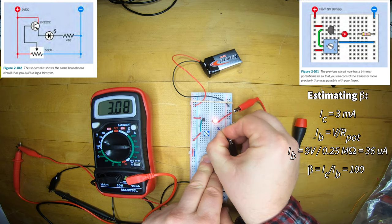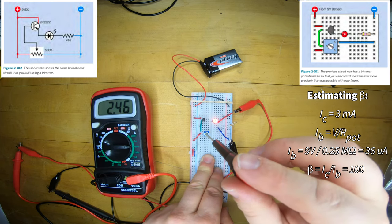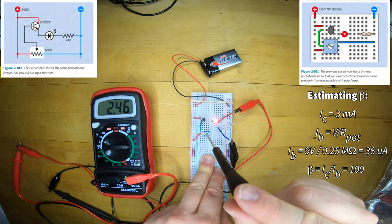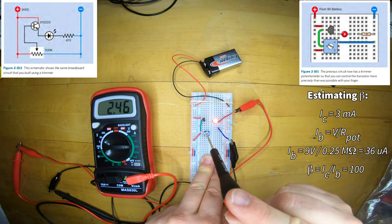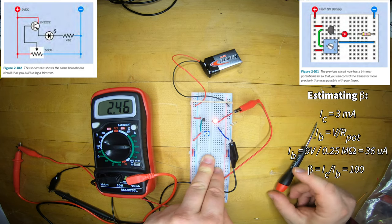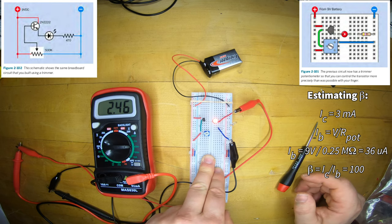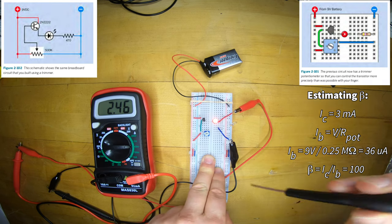We're going to use this to estimate the beta or current amplification value. So I measure about 3 milliamps when I'm in sort of a mid-range position on my pot. A mid-range position on the pot would be about half of its total resistance or about 0.25 megaohms. So I can estimate the current going to the base as 9 volts, my battery voltage, over 0.25 megaohms, about 36 microamps.